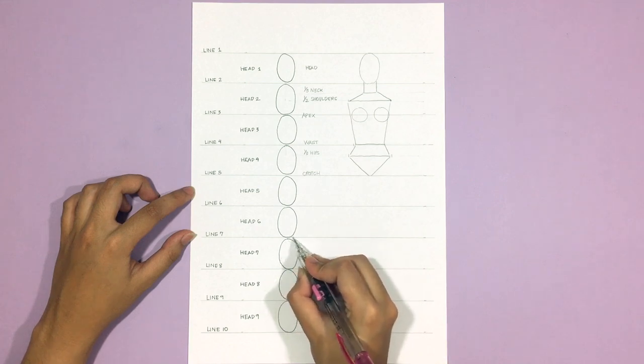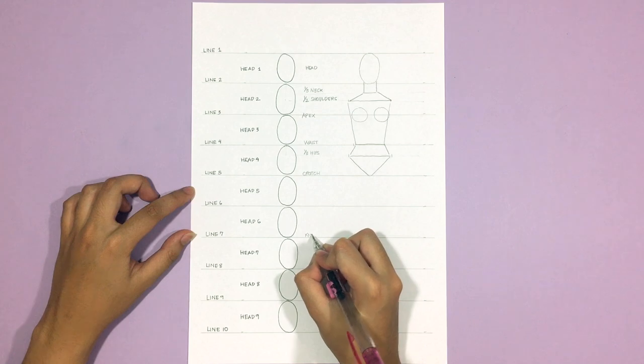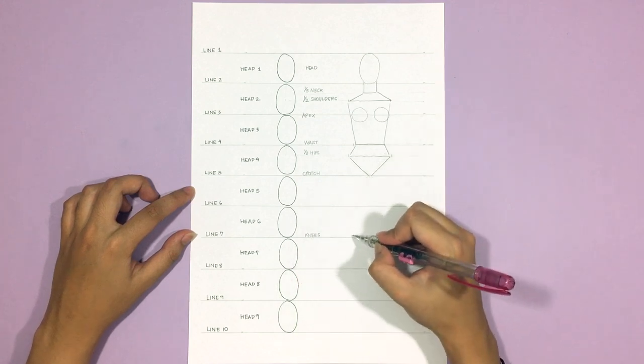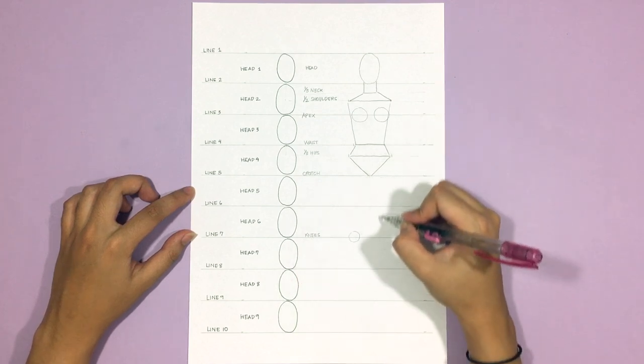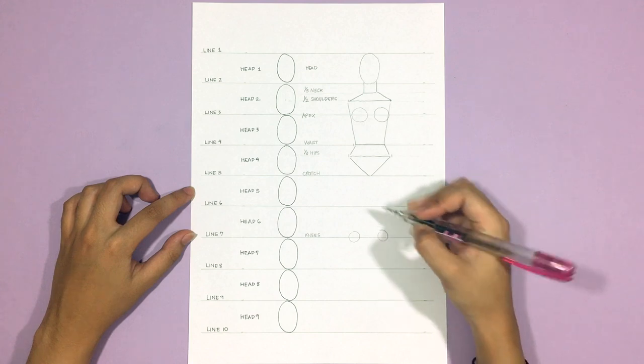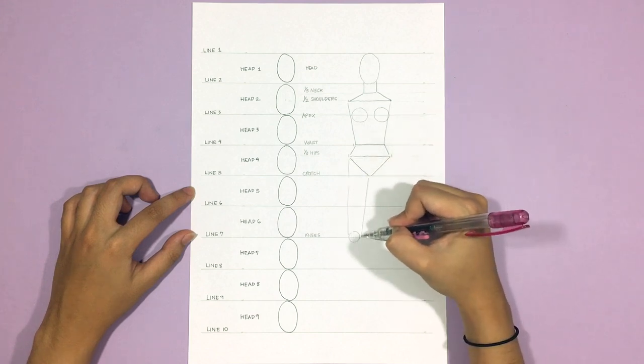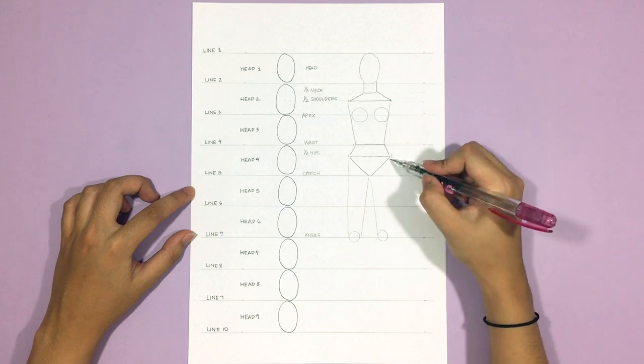All the way down to the top of head seven is where the knees are. And I'm just drawing circles that are fairly far apart because the pose of this drawing is that she's standing with feet slightly apart. The circles also represent the joints.